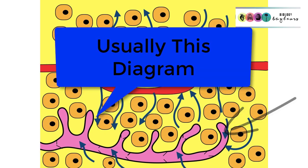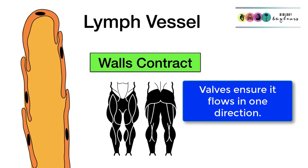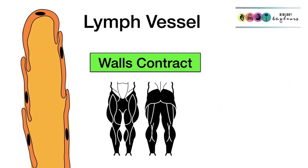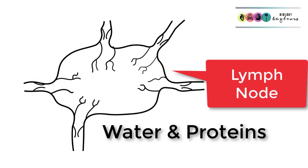Often in the pictures, valves are drawn in as well. Lymph moves through the vessels because valves ensure it flows in one direction only. The walls of the larger lymphatic vessels are contractile — they can contract and push lymph onwards. They are also helped greatly by skeletal muscles, which when they contract, squeeze on the lymph vessels too. Lymph contains water and those small proteins being returned to the blood.